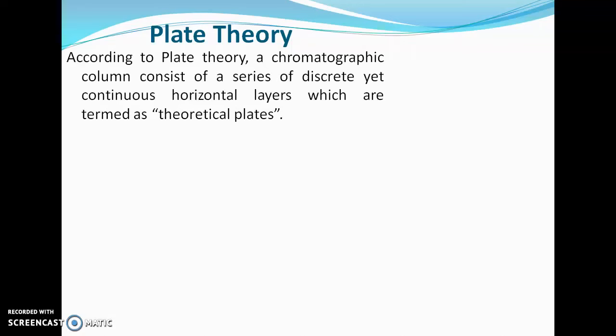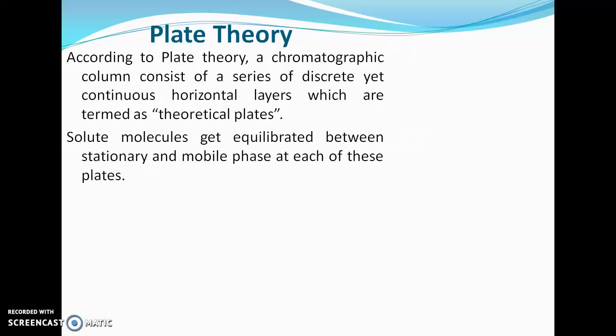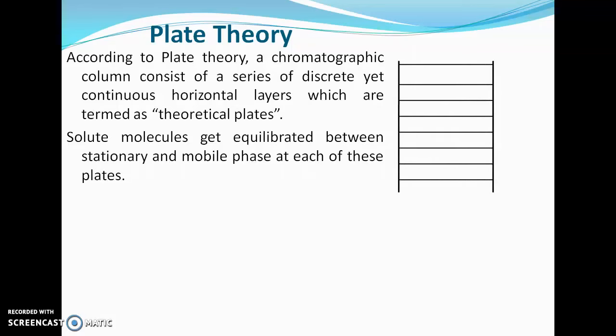According to plate theory, a chromatographic column consists of a series of discrete yet continuous horizontal layers termed theoretical plates. Solute molecules get equilibrated between the stationary and mobile phase at each of these plates. Consider a column packed with stationary phase — these theoretical plates are used for our understanding.